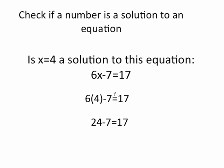Well, 6 times 4 is 24, and 24 minus 7 is in fact 17. So that means that 4 is a solution to this equation. Because when we plugged 4 in for x, the equation balanced.